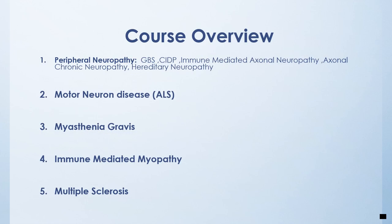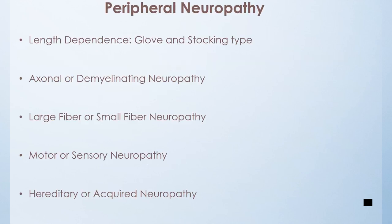Our course overview consists of peripheral neuropathy, motor neuron disease, myasthenia gravis, immune-mediated myopathy, and multiple sclerosis. Let's start with peripheral neuropathy.